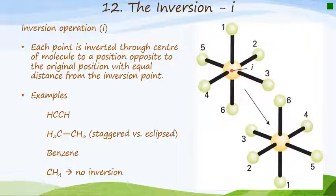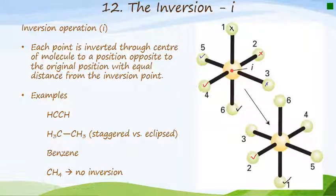If we take atom number one and invert it, it is going to go from where it currently is to position number six. All the other atoms must do exactly the same thing. Atom number two must move to position number four, and atoms number three and five are going to switch places. So the center of inversion — the inversion operation — is right there, labeled with a red dot in the center.